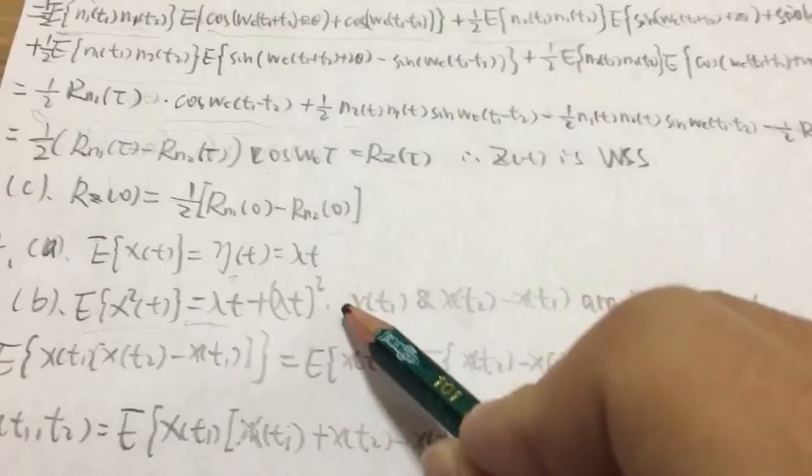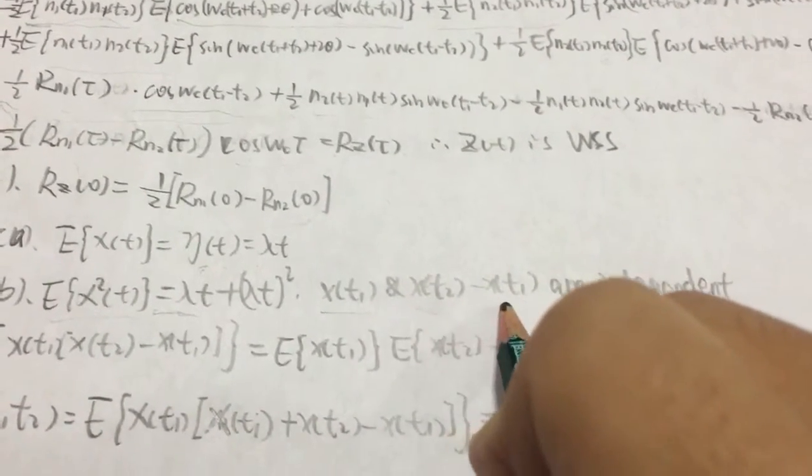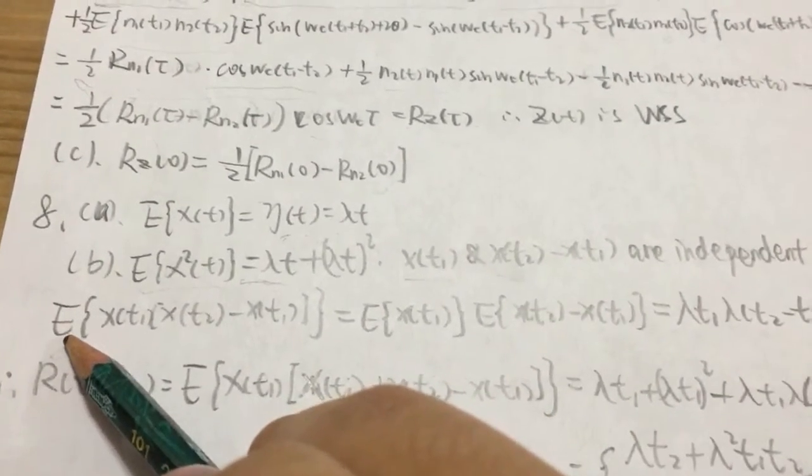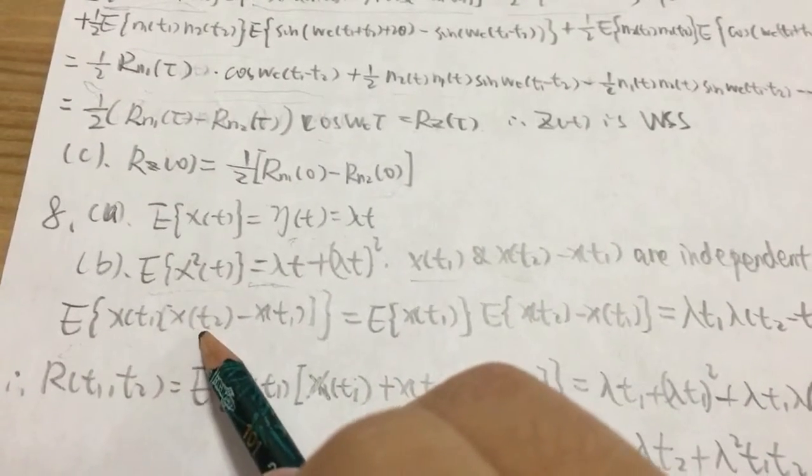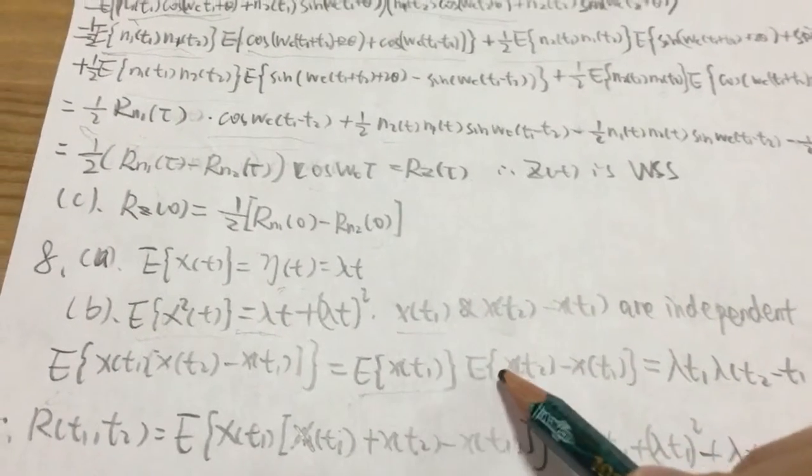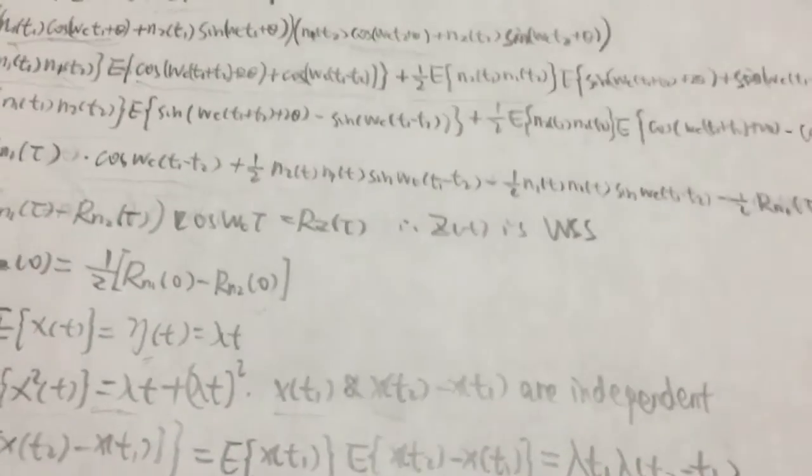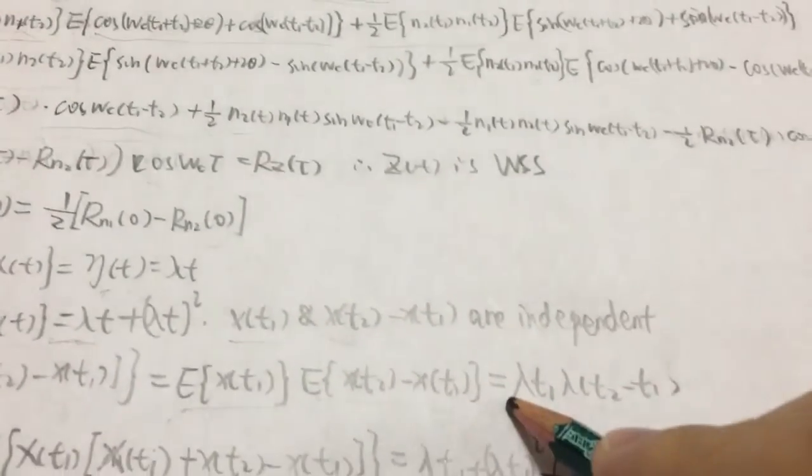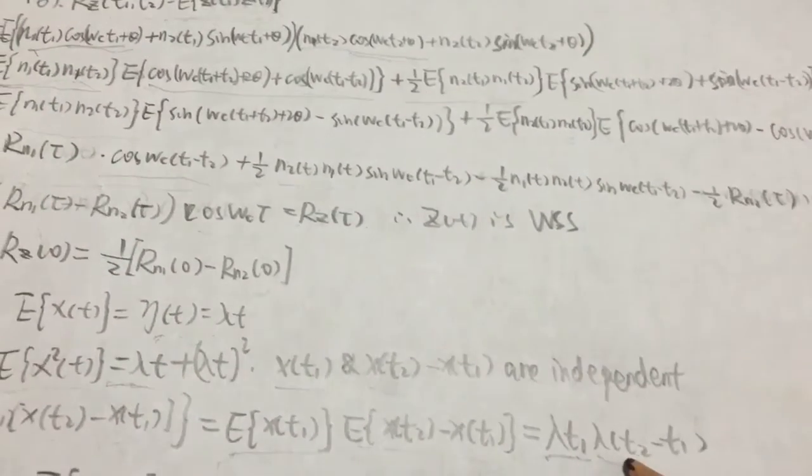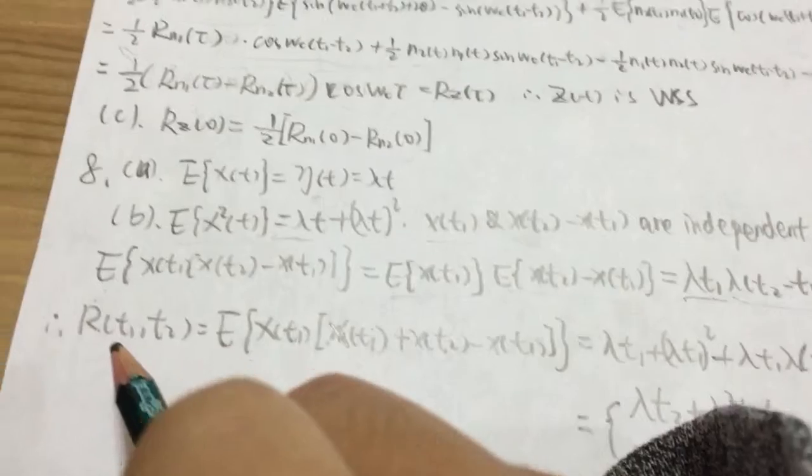And what's more, we have Xt1 and Xt2 minus Xt1 are independent. So we have E[Xt1 times (Xt2 minus Xt1)] equals E[Xt1] times E[Xt2 minus Xt1]. And it's lambda t1 times lambda(t2 minus t1). So we have R(t1,